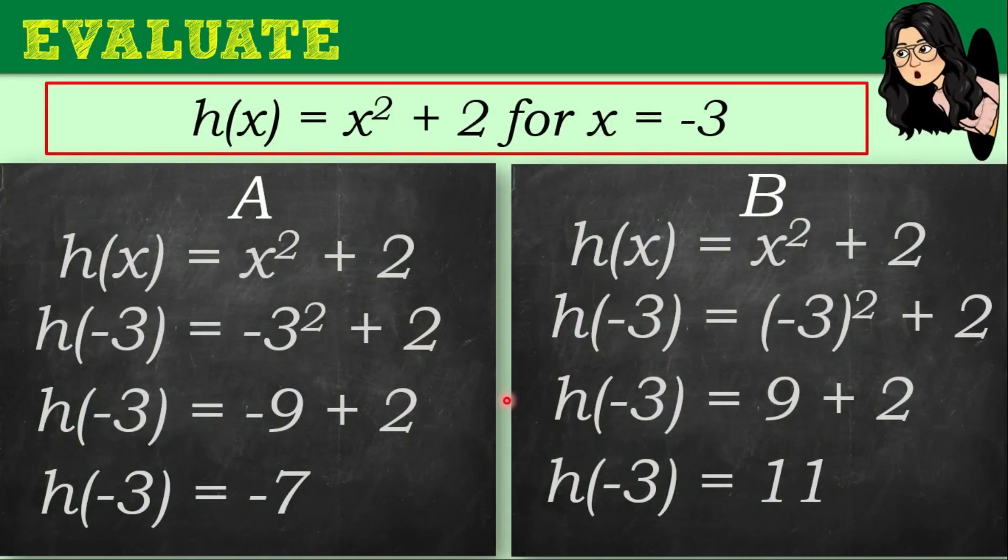How about this? Evaluate h of x is equal to x squared plus 2 for x is equal to negative 3. On the screen, you have two solutions labeled A and B. I'll give you time to pause this video and identify which of the given solution is the right one. Were you able to get it? The correct answer is letter B.